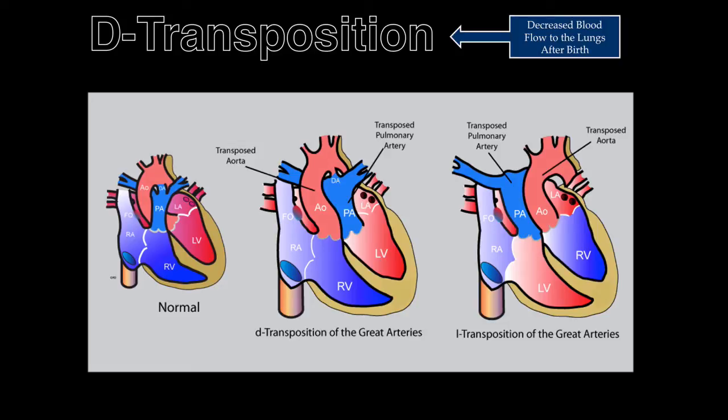Transposition of the great arteries occurs in 1 in 5,000 births. There are two types of transposition: complete or D-transposition, and corrected or L-transposition.